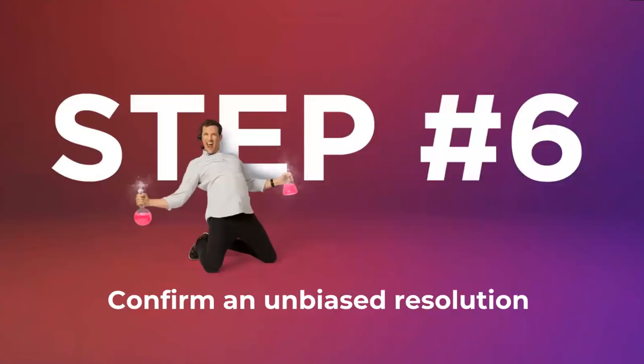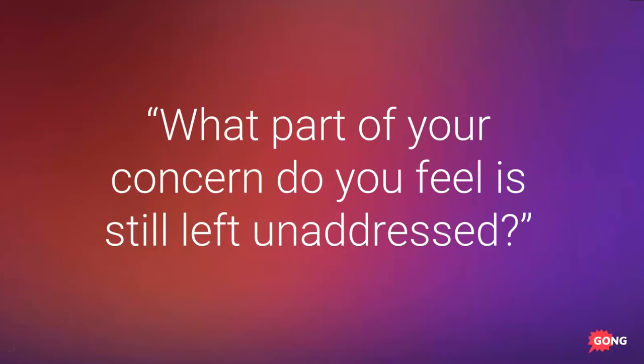Step number six out of seven is to confirm an unbiased resolution. Make sure you're not leading the buyer to confirm the objection is resolved with a leading question, which could leave the objection unresolved and landmine your deal later on. You've gone through the previous five steps, reframed the objection, and it seems like you've overcome it.